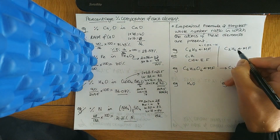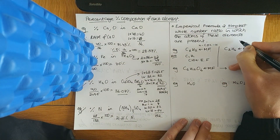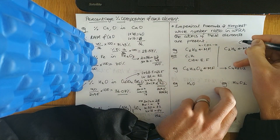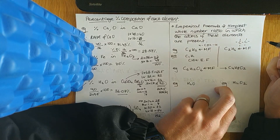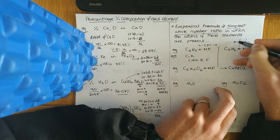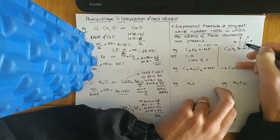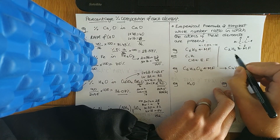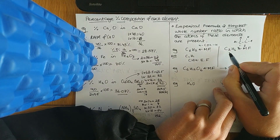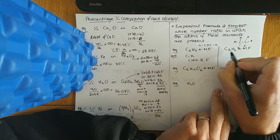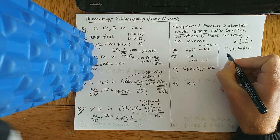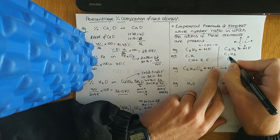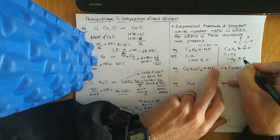So CH is the empirical formula for ethene — the simplest whole number ratio. For C₂H₆ ethane, that's the molecular formula indicating the actual number of atoms present: two carbons and six hydrogens. The structural formula shows the arrangement of atoms. The highest common factor is 2: 2 into 2 once, 2 into 6 three times. So the empirical formula is CH₃.